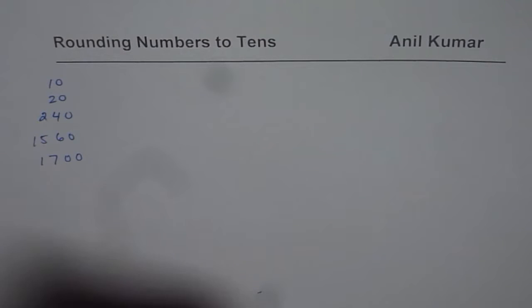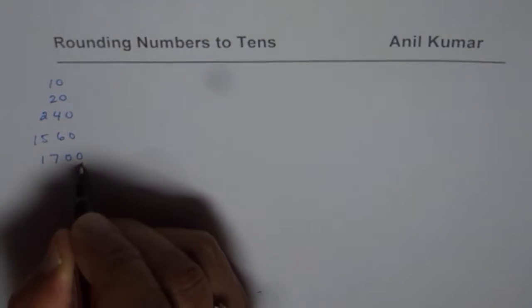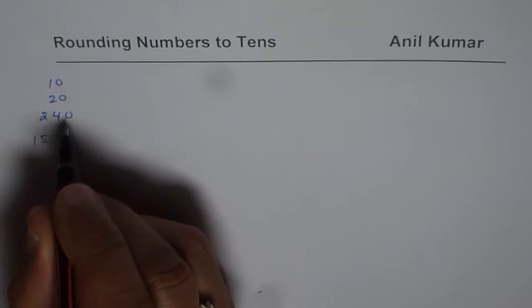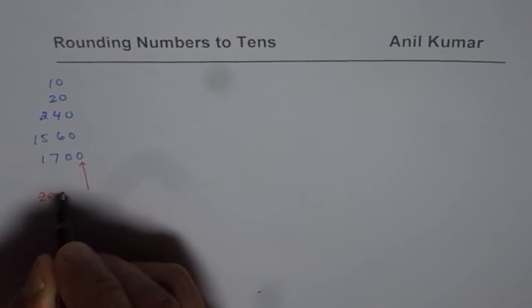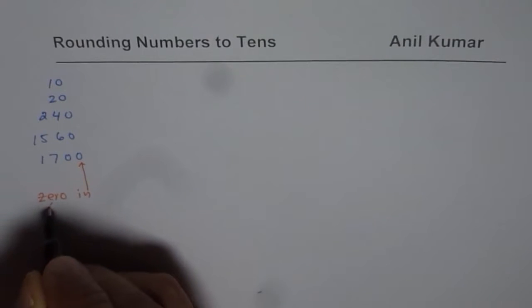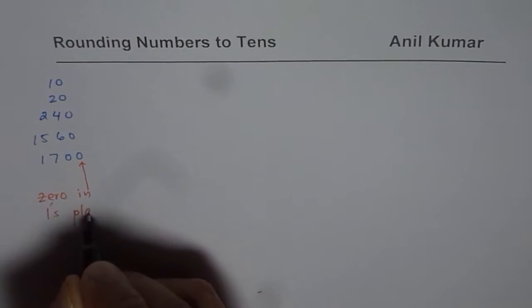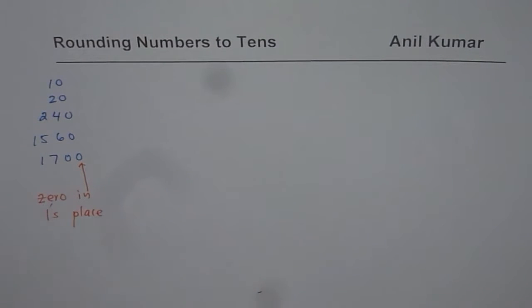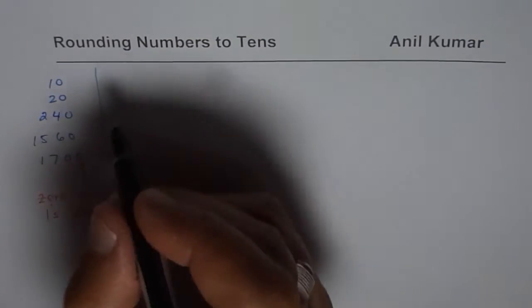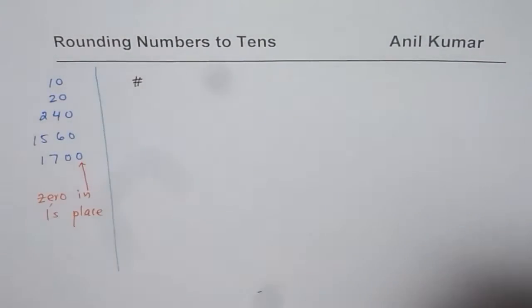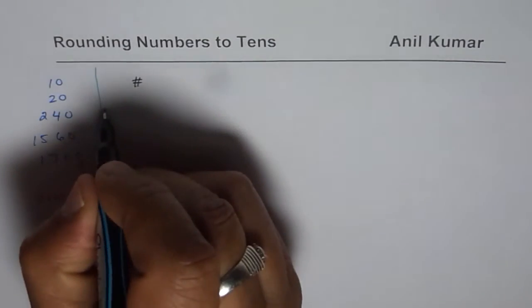Important thing here is that always there will be 0 in one's position. So what do you notice here is a 0 in one's place. That is rounding to tens. Important thing to note. Now let us see how to round numbers to tens. So we will take up some examples.